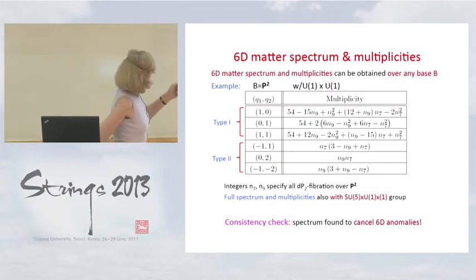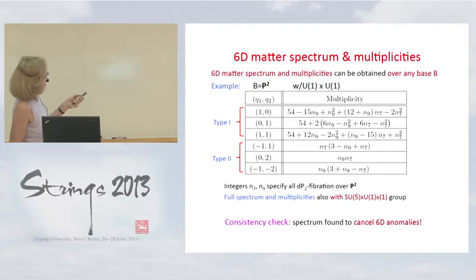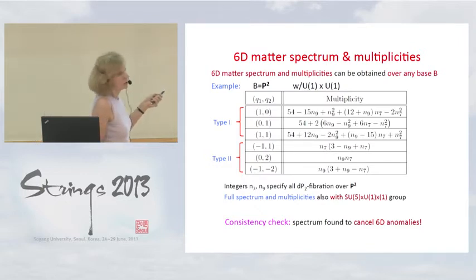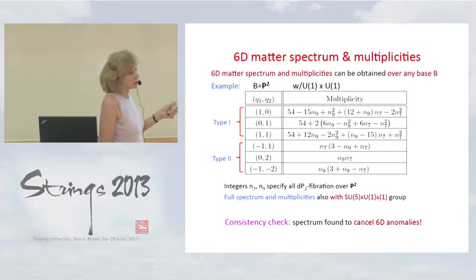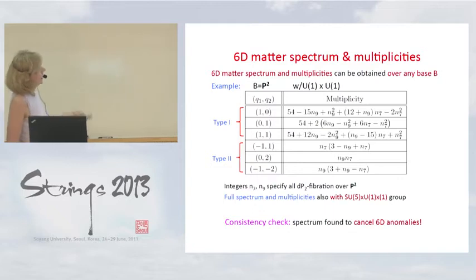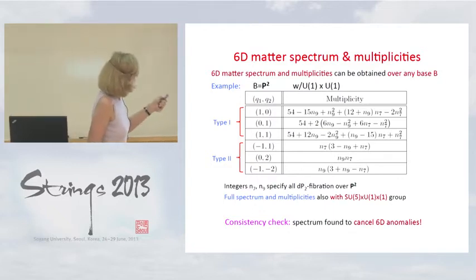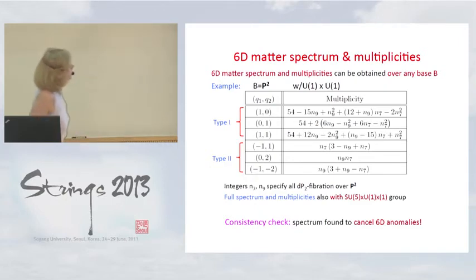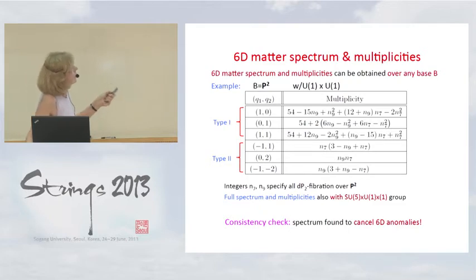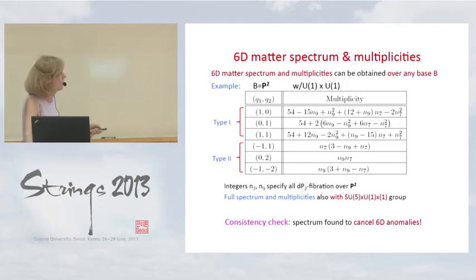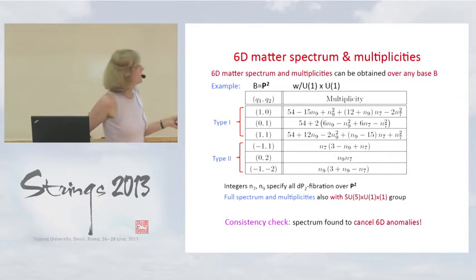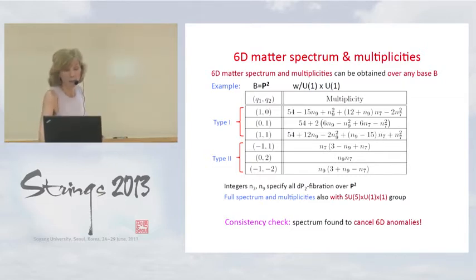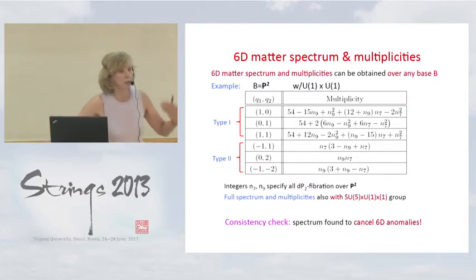As an example, choosing the base to be P2, we classify all possible DP2 fibrations in general in terms of two integers constrained from previous discussion, and give the outcome for the whole class of all possible DP2 elliptic fibrations when the base is P2. In six dimensions, we can generalize to any base. We can also address the non-generic Calabi-Yau case with SU-5 symmetry and get the full spectrum with multiplicities. As a byproduct, we check that this spectrum is consistent — it cancels all six-dimensional anomalies, providing an independent check that our geometric procedure works precisely.